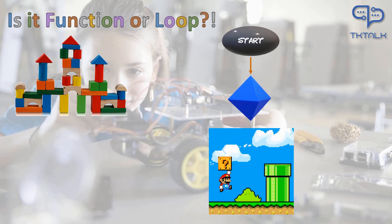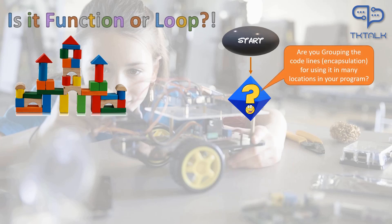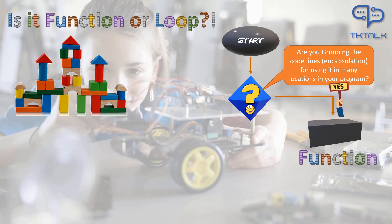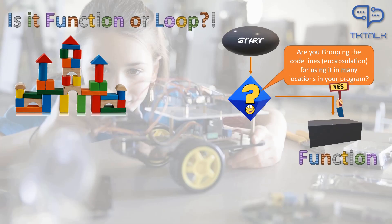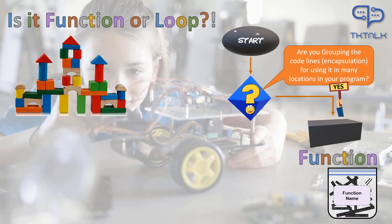Question shape in flowchart is a diamond block. Remember it with a question mark box of Super Mario. First question is, are you grouping the code lines for using it in many locations in your program? Questions in flowchart are always yes or no questions. If the answer is yes, I want to group these code lines for using them in many locations in my program, then function is the selected choice. The rectangle shape in flowchart means action. The action here is the choice and use of function technique.